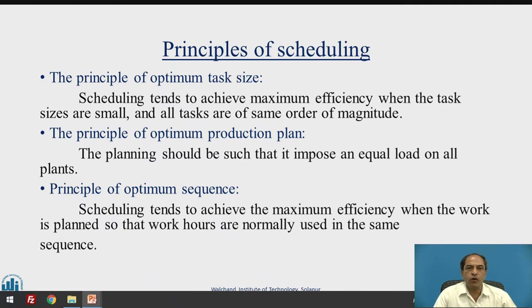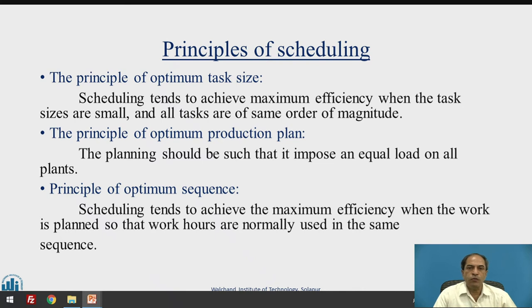There are some principles of scheduling. The first is the principle of optimum task size — it tends to achieve maximum efficiency when task sizes are small and all tasks are of the same order of magnitude. The principle of optimum production plan imposes an equal load on all plants. The principle of optimum sequence tends to achieve maximum efficiency when work is planned so that work hours are used in the same sequence.